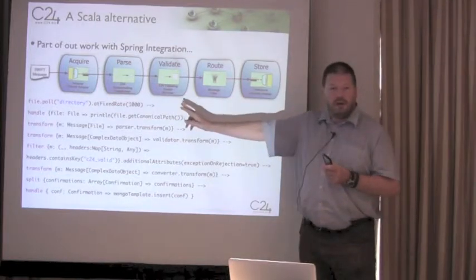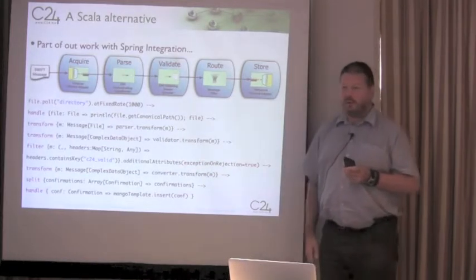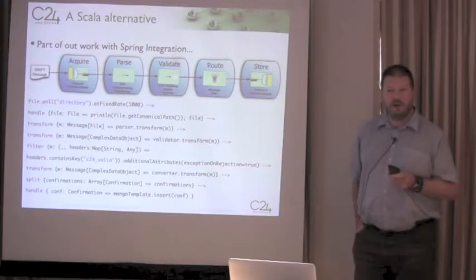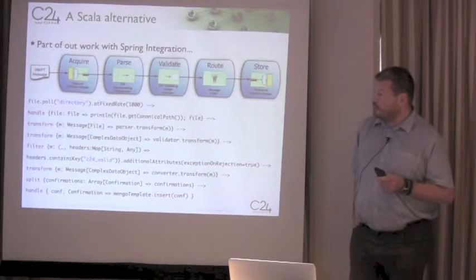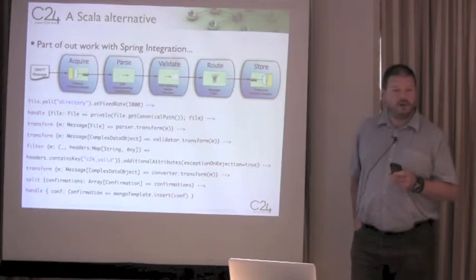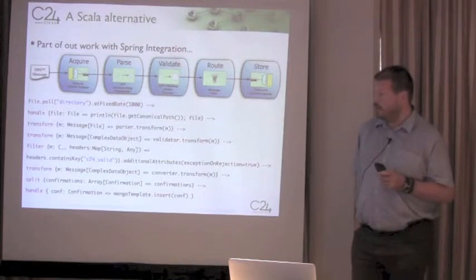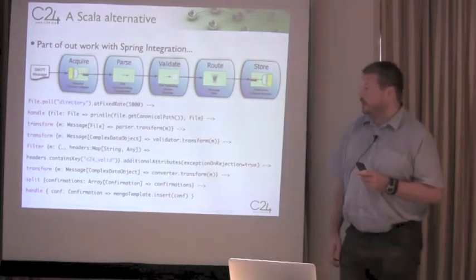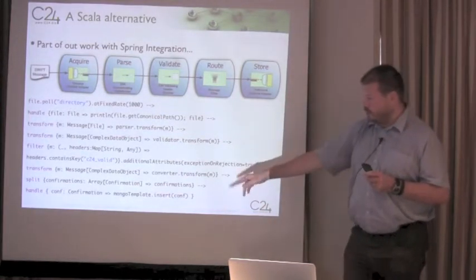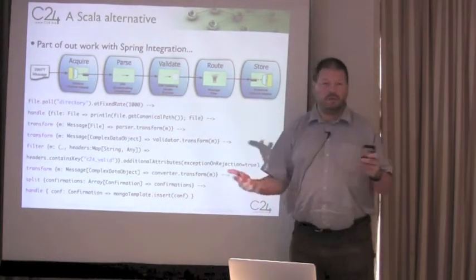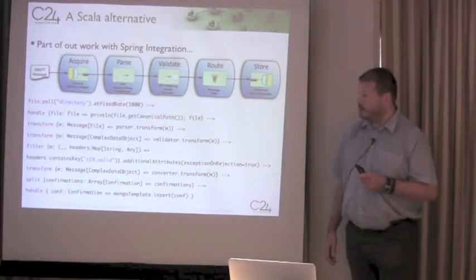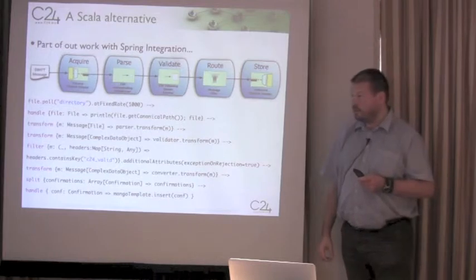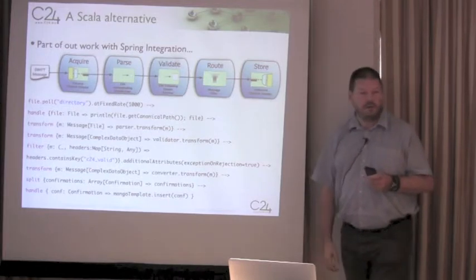Last year we worked with VMware — now Pivotal — and together created a Scala DSL that sits on top of Spring Integration. This gives a more integration-centric DSL allowing people to pipe messages around. A typical workflow picks up files, polls at a rate of every thousand milliseconds, performs transformations, and puts results into a MongoDB template — MongoDB being a NoSQL type database. This was released last year and is in the public domain, so there are examples available.